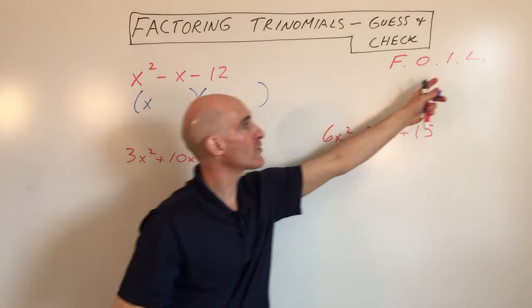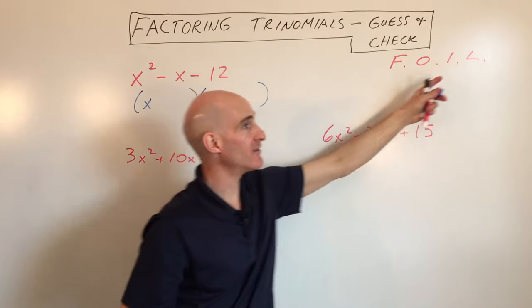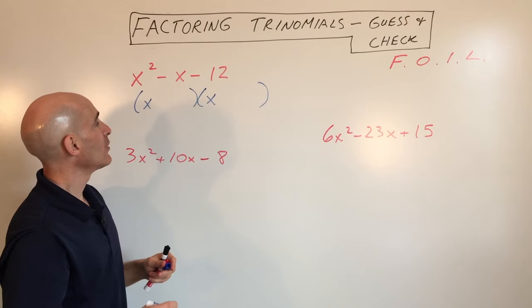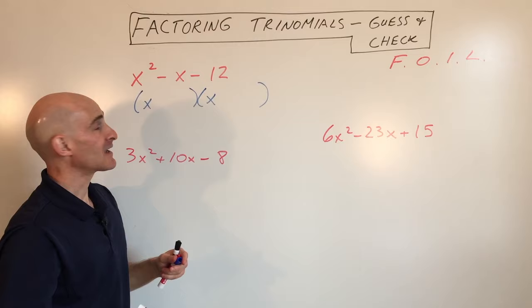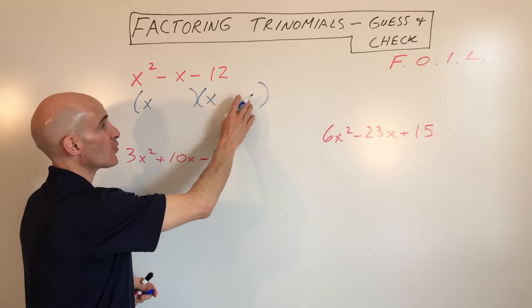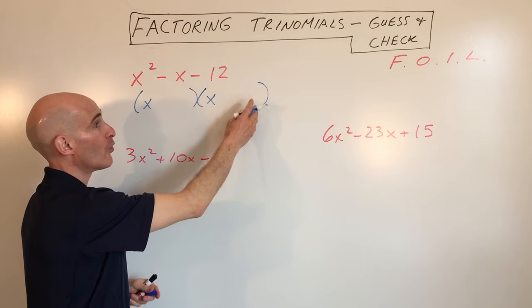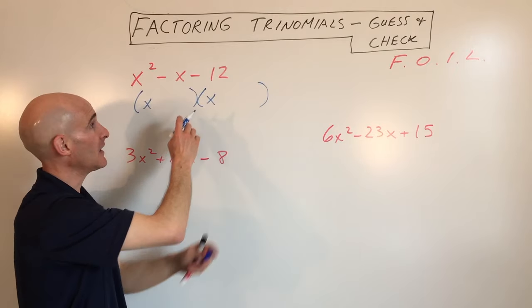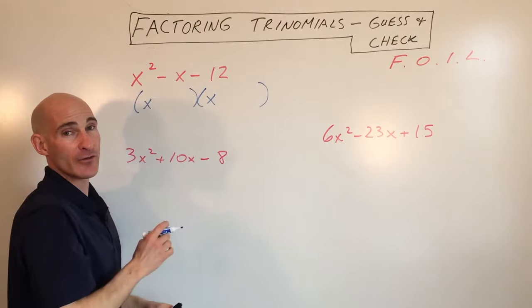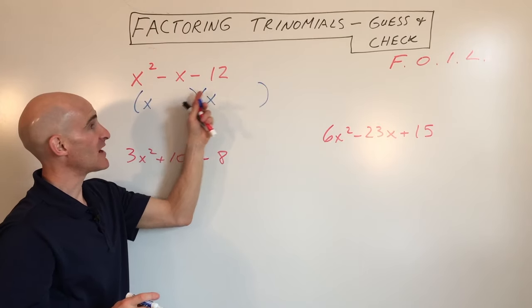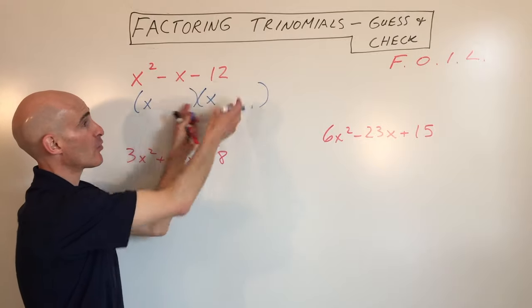Then what I do is I jump over here to the last term. The L stands for last. I say, how do I get negative 12? Well, I can either do 1 and 12, 2 and 6, 3 and 4, or I could change the order. I know this is negative 12, so it means one of these has to be positive, one has to be negative, because a positive times a negative is a negative. Or I could switch them.